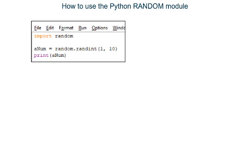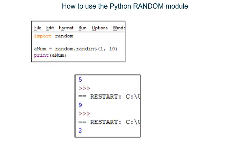The final line of the program prints out whatever integer has been stored inside variable anum. I ran the program three times. The first time I ran it, 5 got stored in variable anum and was then printed out. The second time I ran it, 9 got stored in variable anum and then was printed out. The third time I ran it, 2 was stored in variable anum and was then printed out.